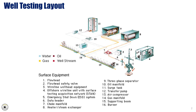The well-testing layout is a representation of the individual pieces of equipment arranged to facilitate the production of the well at the surface. In this diagram, you can identify the names and positions of the various pieces of surface equipment that make up the surface well-testing setup. Each component plays a crucial role in ensuring the safe and efficient testing and production of the well, from measuring flow rates to handling produced fluids.